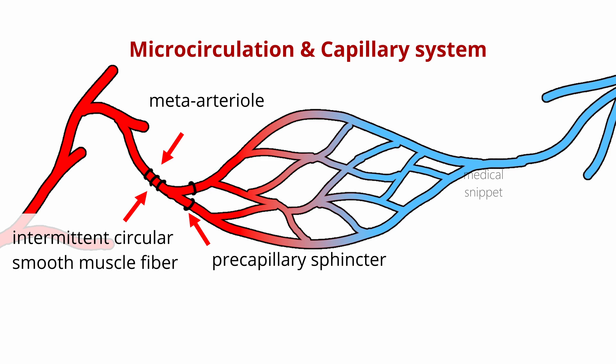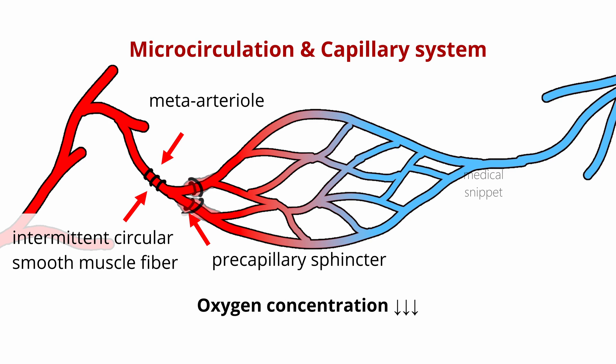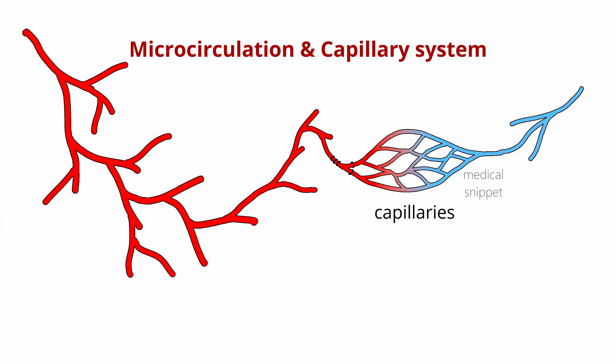The most important factor is oxygen concentration in the tissue. When there is less oxygen concentration in the tissues, these sphincters open and allow more blood into the capillaries, so that more oxygen can be delivered to the tissues. From the capillaries, venules arise and then drain into larger veins.